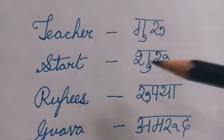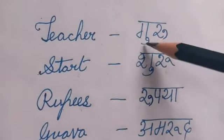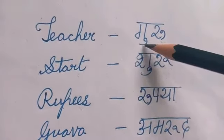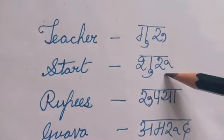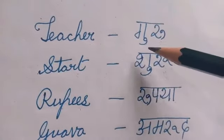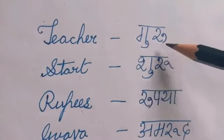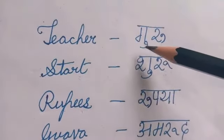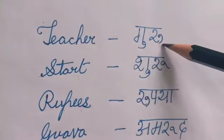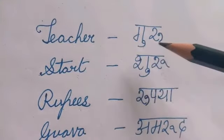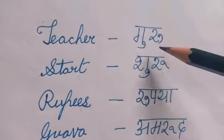Chhoti U ko hum kam khichate hain aur badi U ko hum zyada khichate hain. Guru — Ga me chhoti U ki matra, Ru me chhoti U ki matra — Guru.